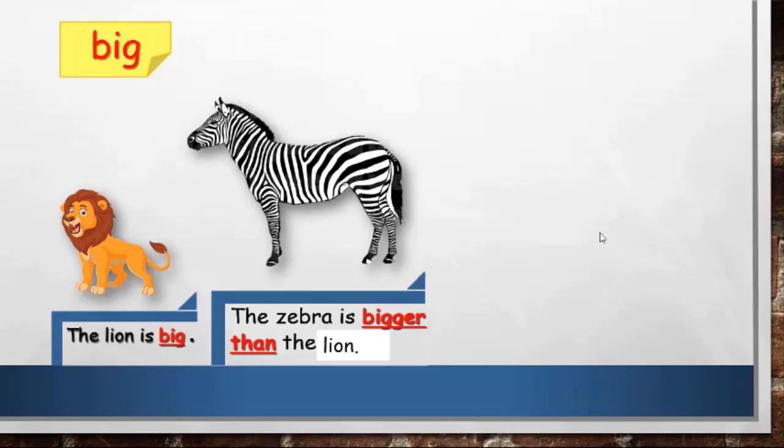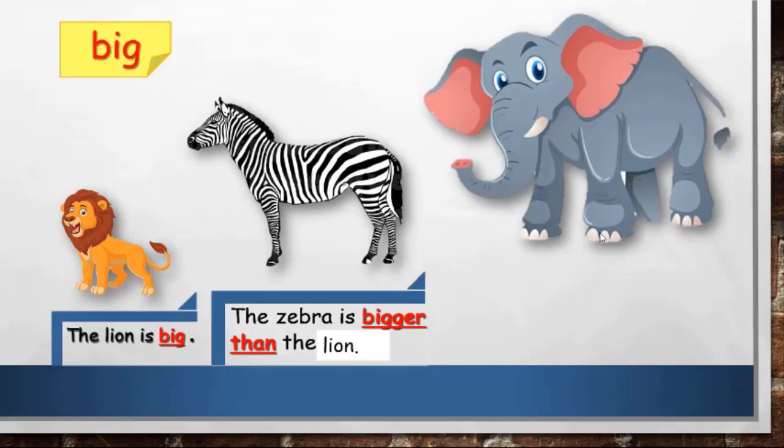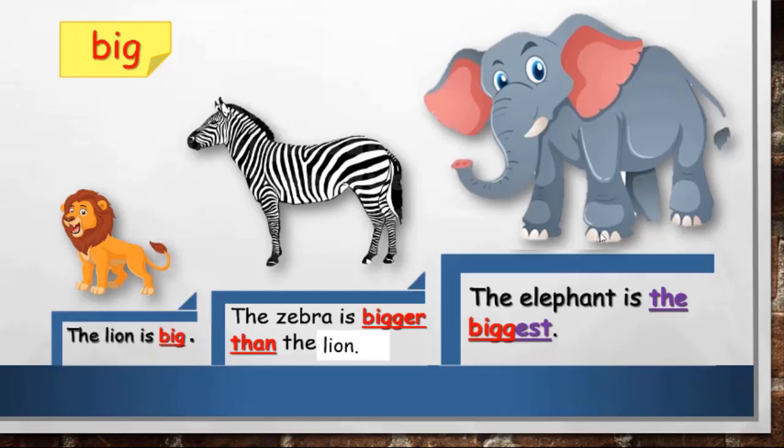But what if we have a third animal? It's an elephant, and the elephant here is very big. Is there something bigger than the elephant in this slide? No. So how can we say there is no other animal bigger than the elephant? The elephant is the biggest animal here. I used the adjective '-est', and it means no other animal is bigger than the elephant.